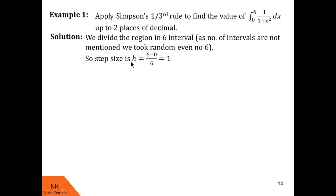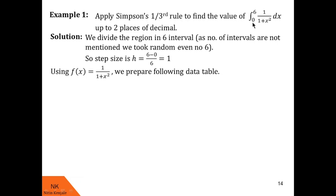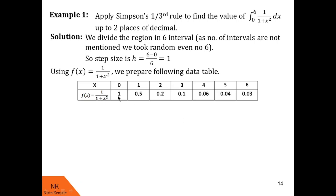So if we take step size h = 1, then x₀ = 0, x₁ = 1, x₂ = 2, and so on. Similarly, x₆ = 6. These x values, x₀ through x₆, are obtained by adding h to the previous value.